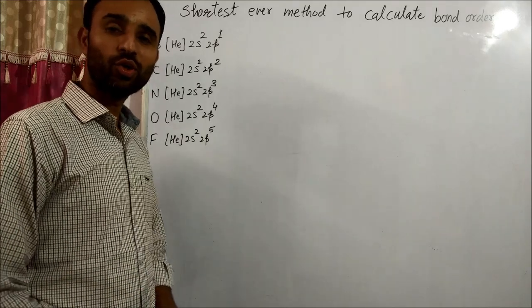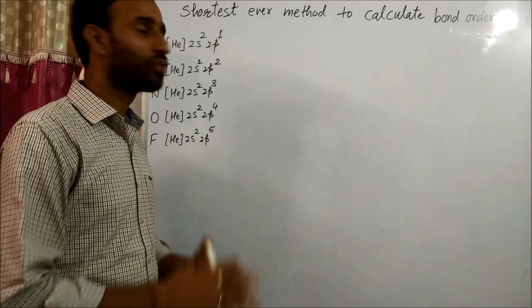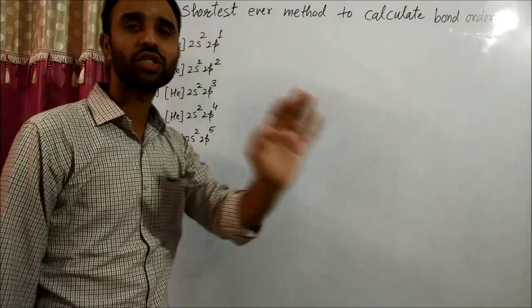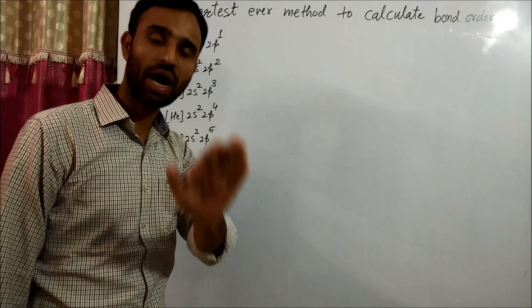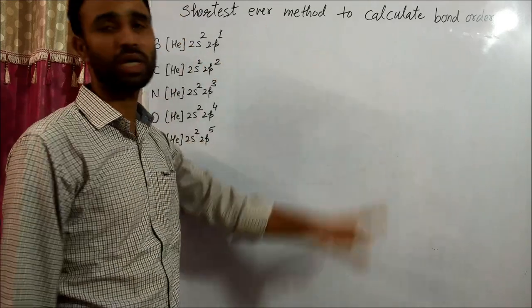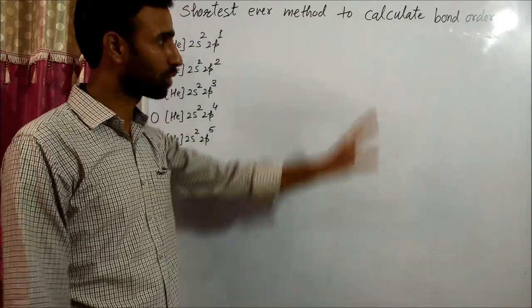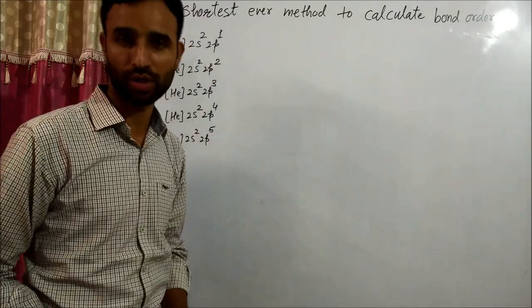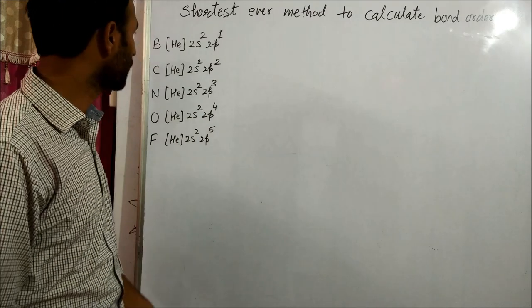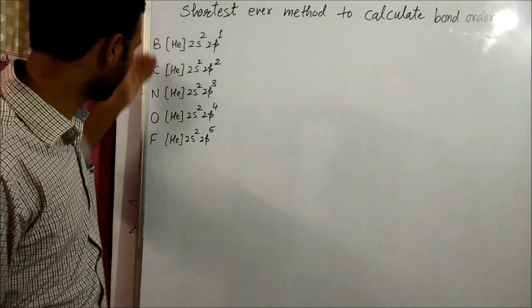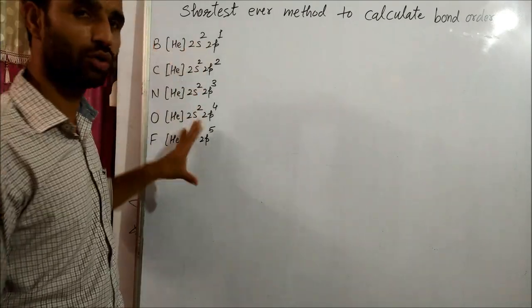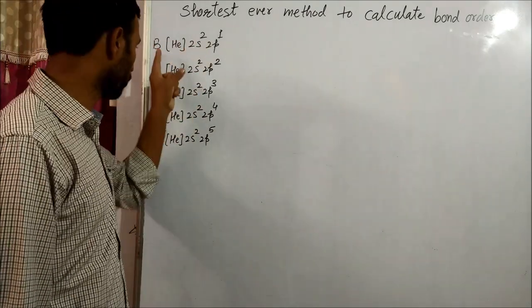Hello friends, today's topic is very important and it is the shortest method — I guarantee you it is the shortest ever method to calculate bond order. To calculate bond order, you have to remember only these electronic configurations.